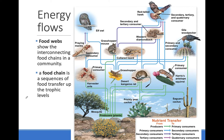A food web can follow the complicated flow of energy through an ecosystem. A food web tries to capture all the energy transfers between organisms. The food web begins with producers. In this desert, the producers are plants such as cactus. Arrows represent the direction of energy flow from the producers to the consumers.